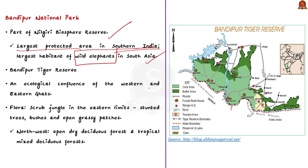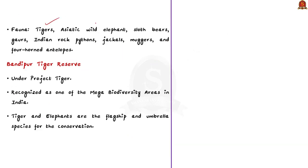The Bandipur Tiger Reserve is also situated in Southern Karnataka. Geographically, it is an ecological confluence of the Western and Eastern Ghats, giving it a wide range of flora and fauna. The Tiger Reserve has scrub jungle in its eastern limits and open dry deciduous and tropical mixed deciduous forests in its northwestern limits. This diverse vegetation supports a wide range of species — Bandipur's main inhabitants are tigers and Asiatic wild elephants.